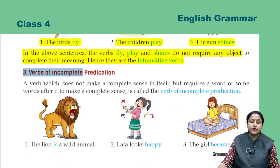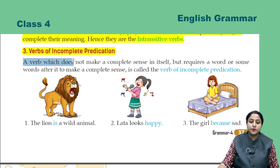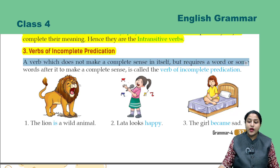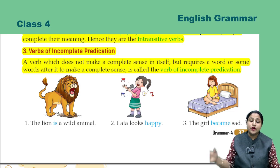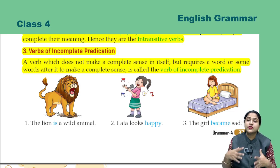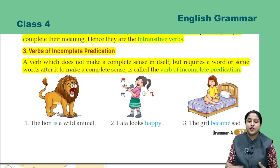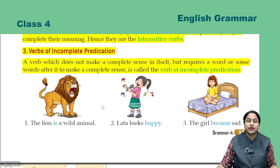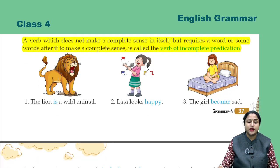Third is verbs of incomplete predication. A verb which does not make a complete sense in itself, but requires a word or some words after it to make a complete sense, is called the verb of incomplete predication. A verb that cannot give complete sense on its own and needs more words to provide sense is called a verb of incomplete predication.